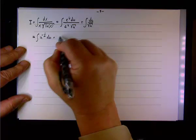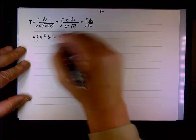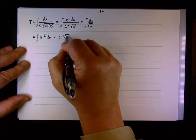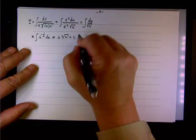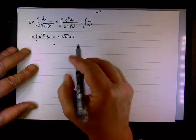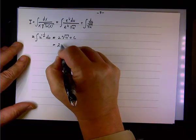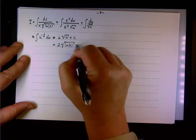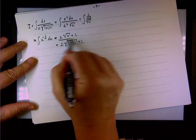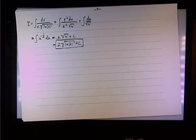The antiderivative of u to the negative one-half is two times the square root of u, or u to the one-half, plus c. Back-substituting, u is the natural log of x, so the answer is two times the square root of the natural log of x, plus c.